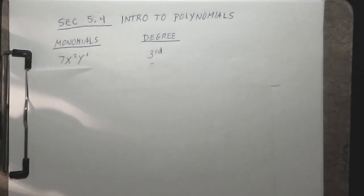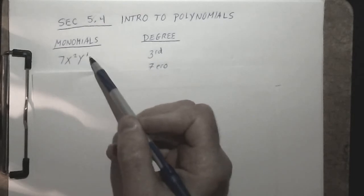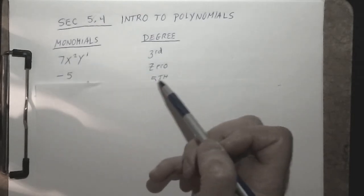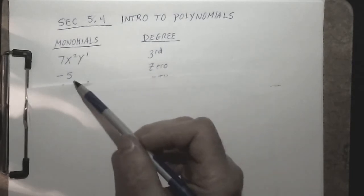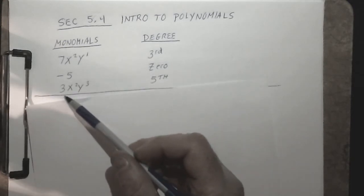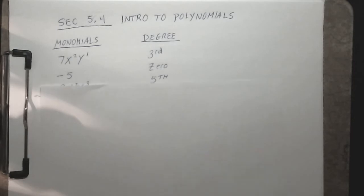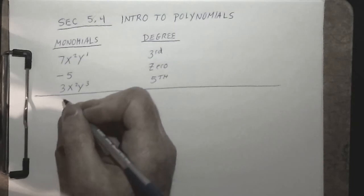An example of a monomial would be 7x²y, and the degree of this monomial is the sum of the degrees of the variables, so 2 plus 1 is 3 — this is a third-degree monomial. Another example of a monomial would be negative 5, which is just a constant monomial of degree zero. And another example would be 3x²y³, the degree of which would be 2 plus 3, or 5th degree.